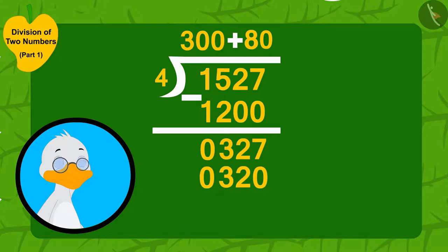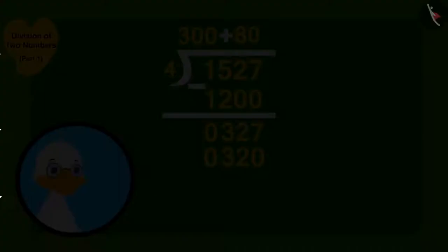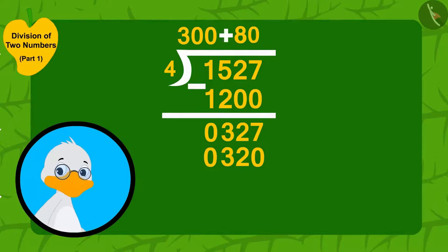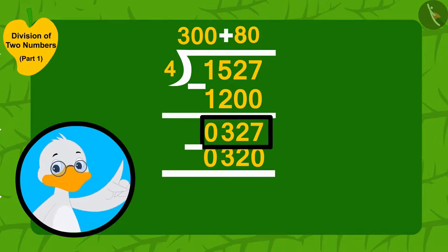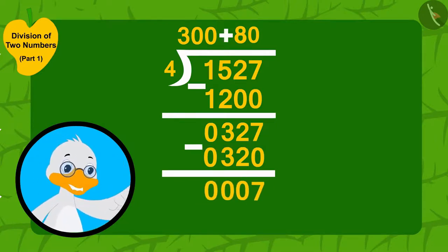Uncle wrote 80 here and wrote down three hundred and twenty at the bottom. Now, Barbole uncle subtracted three hundred and twenty from three hundred and twenty-seven.